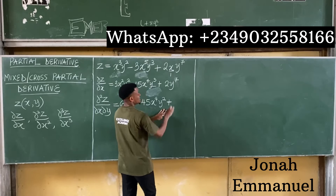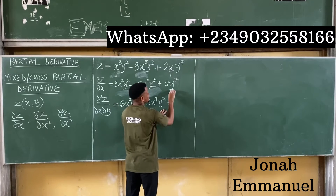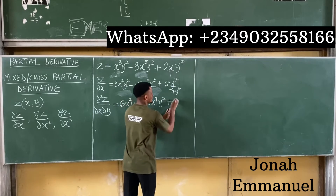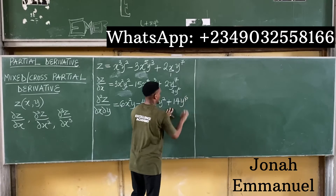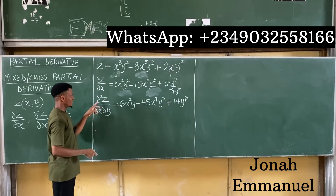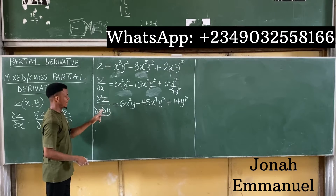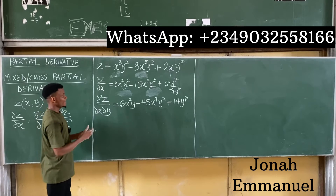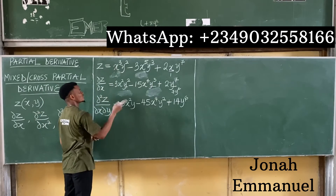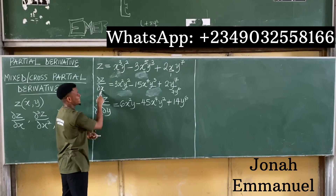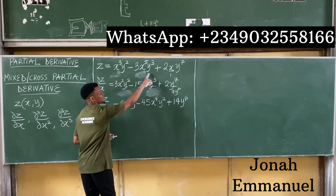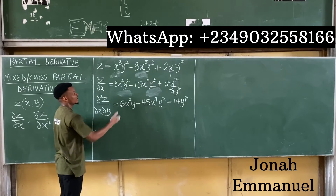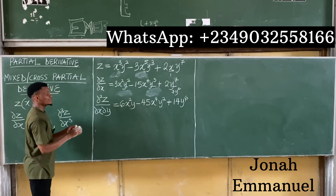Differentiating y to the power 7 gives 7y to the power 6, and 2 times 7 gives 14y⁶. So ∂²z/∂x∂y equals 6x²y minus 45x⁴y² plus 14y⁶. That's how we do the cross or mixed partial derivative: first differentiate with respect to x, then differentiate that result with respect to y.